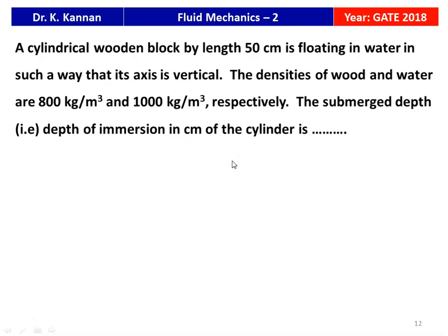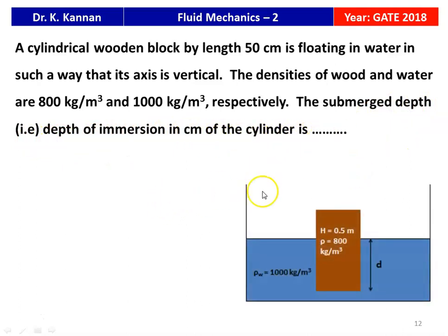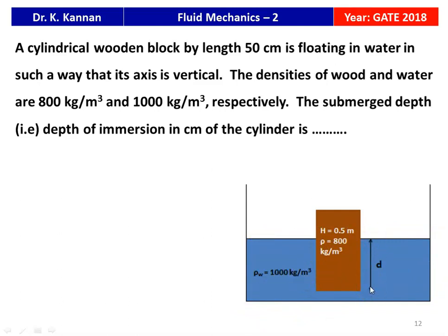The next question from the 2018 Gate Question Paper: 'A cylindrical wooden block of length 50 cm is floating in water with its axis vertical. The density of wood is 800 kg/m³ and the density of water is 1000 kg/m³.' The wooden block has height 0.5 m with density 800 kg/m³, immersed in water of density 1000 kg/m³ to a depth d. We need to calculate the submerged depth d.